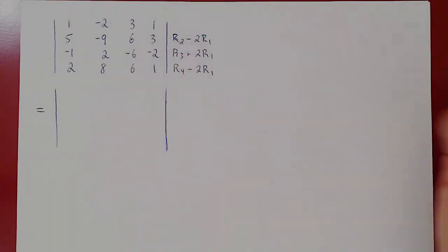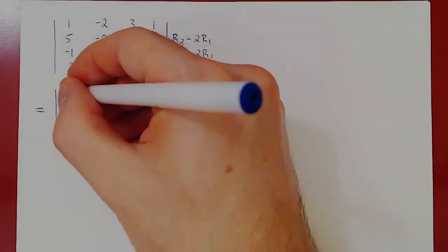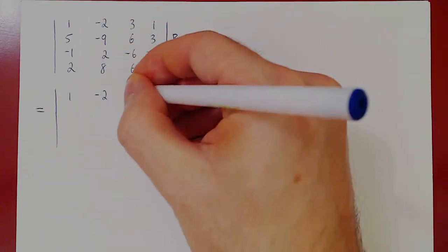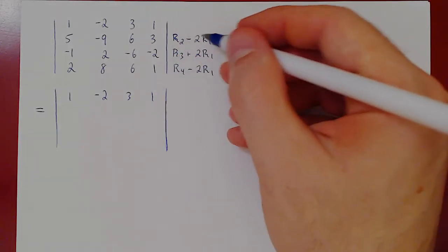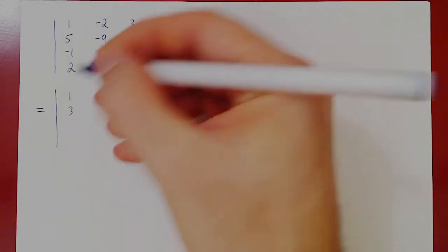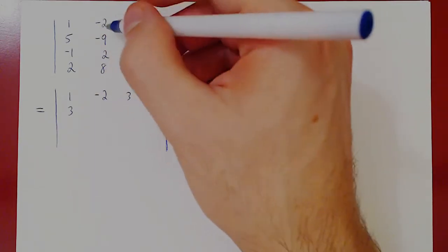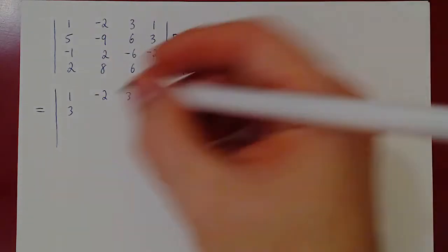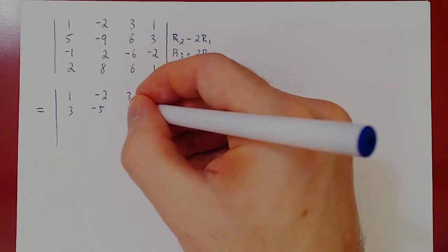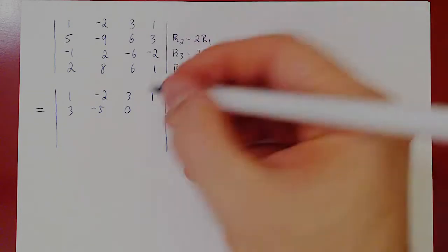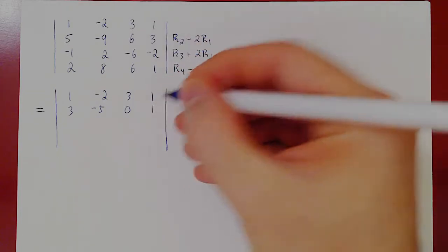Let's recopy the first row — we're not changing it: 1, negative 2, 3, 1. Row 2 minus 2 row 1: 5 minus 2 is 3. Negative 9 minus 2 times negative 2 is negative 9 plus 4, which is negative 5. 6 minus 2 times 3 is 6 minus 6, which is 0. 3 minus 2 times 1 is positive 1.